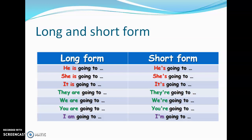Now we will talk about the long form and the short form. The long form is without contraction; the short form is with contraction — we contract the subject pronoun with the verb to be. Long form: 'he is going to,' 'she is going to,' 'it is going to,' 'they are going to,' 'we are going to,' 'you are going to,' 'I am going to.' Short forms: he's, she's, it's, they're, we're, you're, I'm going to.